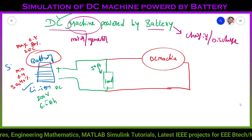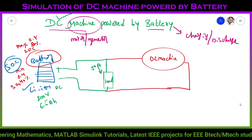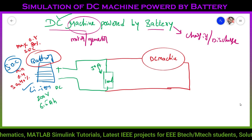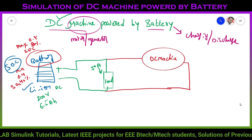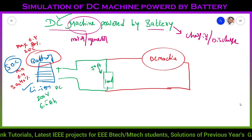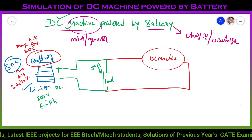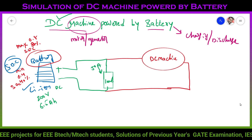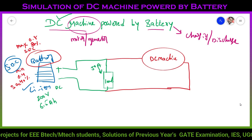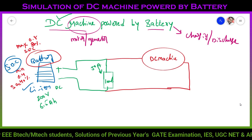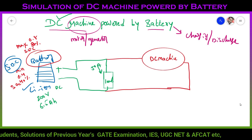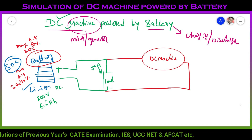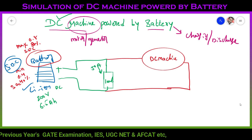Here SOC — state of charge — is nothing but, for example if you take your mobile phone with 100% charging, while you are using the mobile that charging is gradually reducing. By starting to use your phone it will be 100%. After using half an hour or one hour it will be reducing gradually — 80%, 70%, 60% — means you are using that voltage in the battery. So like that, this battery also has maximum and minimum states.